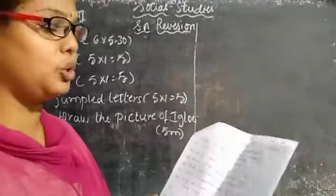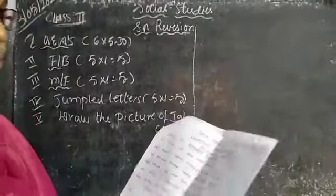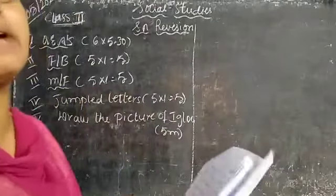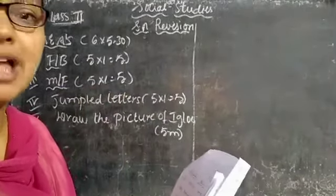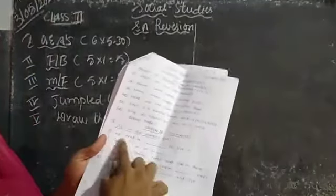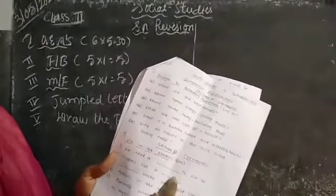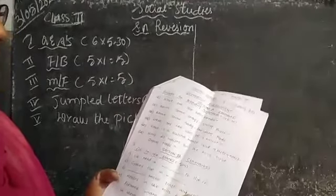Coming to the section two, twenty marks. That is the objective. Already I wrote in the blanks, five blanks have given. Five into one is five. You see children, we need a dash to live in. What we need? We need house to live in. Gypsies live in dash, caravans. Dash makes tents and live in them. We will leave in the gypsies.